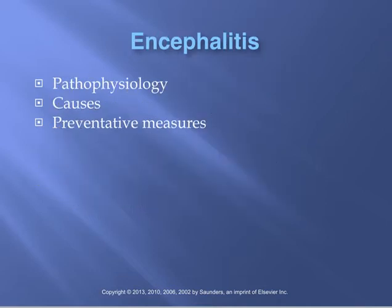Encephalitis is inflammation of the brain tissue and surrounding meninges, and can affect the cerebrum, brainstem, and cerebellum. Most commonly it is caused by a virus — such as mosquito-borne West Nile, tick bites, or herpes simplex. A virus enters the CNS through the bloodstream, inflammation follows, and that damages the neurons. The key difference between meningitis and encephalitis is that encephalitis does not have pus or exudate formation.